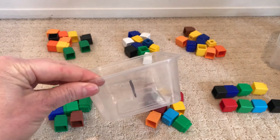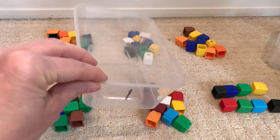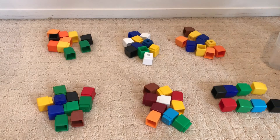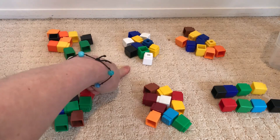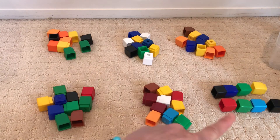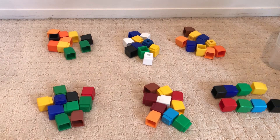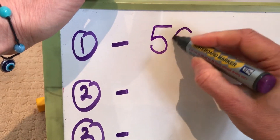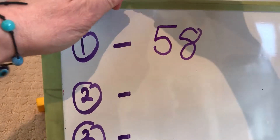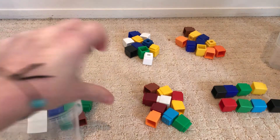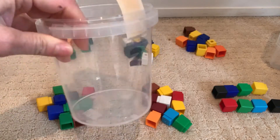I just counted all the blocks that fitted into container 1. I put them into groups of 10. So I have 1 ten, 2 tens, 3 tens, 4 tens, 5 tens and 8 more. So 5 tens and 8 more makes 58.